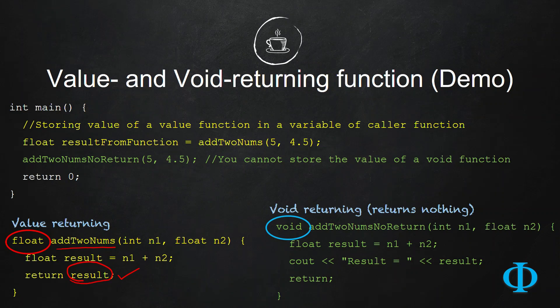And this result can be stored inside a variable of the caller function. For example, this result has been stored in the variable named resultFromFunction.